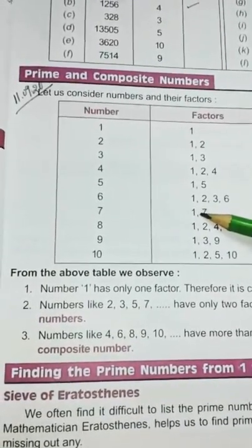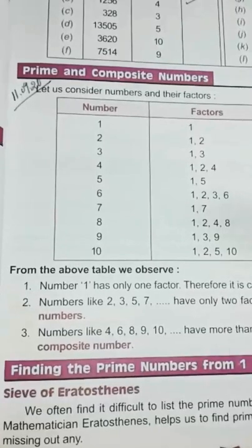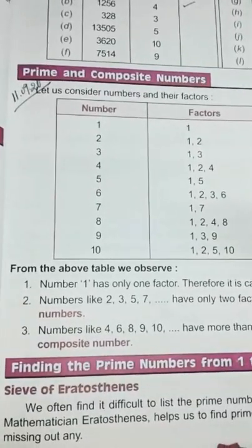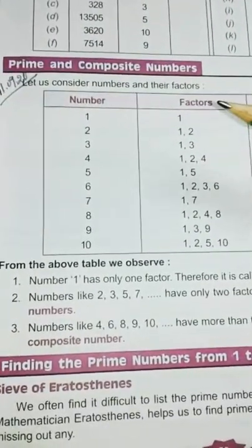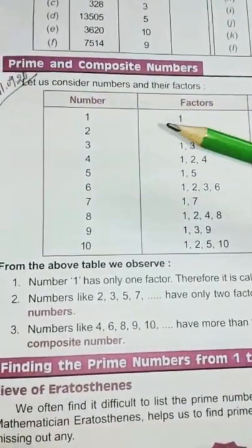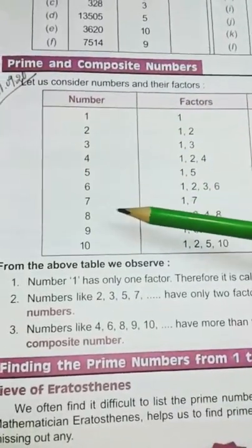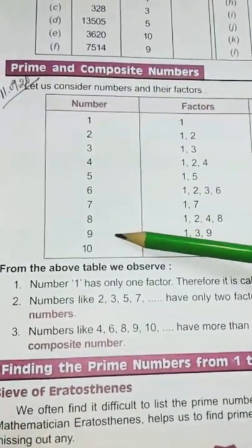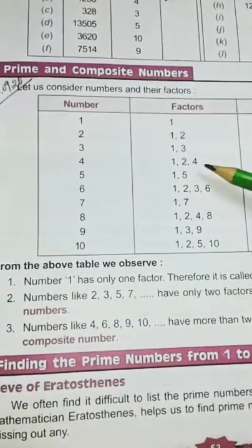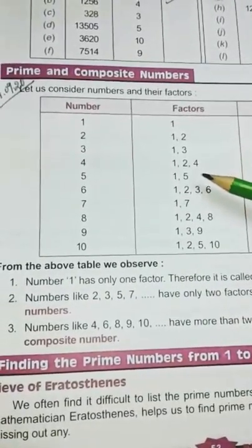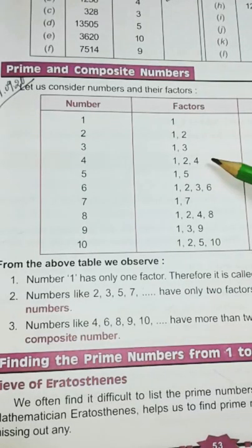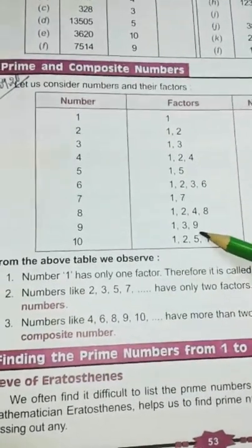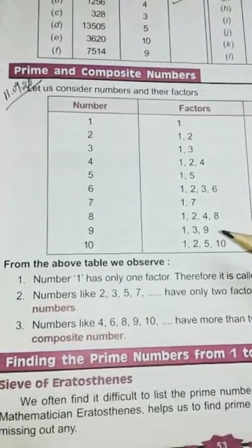Then comes composite number. The numbers that have more than two factors are known as composite numbers. For example, 4, 6, 8, 9 and 10. You see, they have more than two factors. Here three factors, here four factors, here also four factors. So they are known as composite numbers.